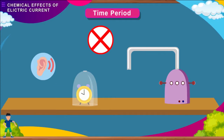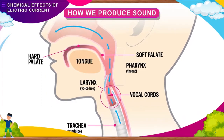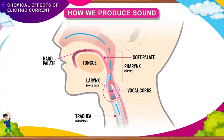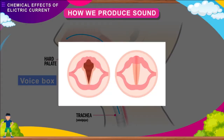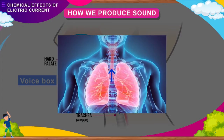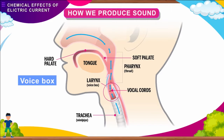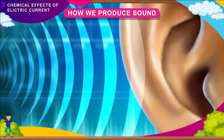The organ in human beings involved in the production of sound is the larynx, commonly known as the voice box. The voice box is situated in the neck at the upper end of the windpipe. Sound is controlled by vocal cords, which are thin bands of tissue stretched across the voice box with a narrow slit between them for air to pass. The vocal cords vibrate when air from the lungs is forced through the slit. Sounds of higher frequency are produced in women and children because they have smaller vocal cords.